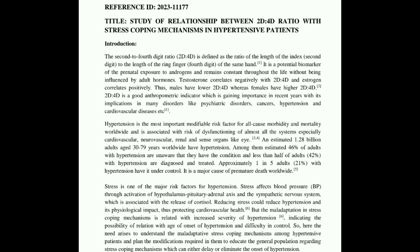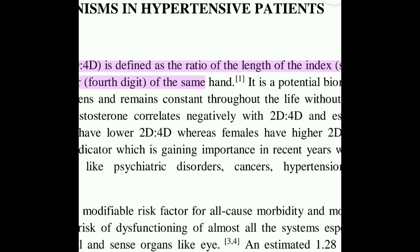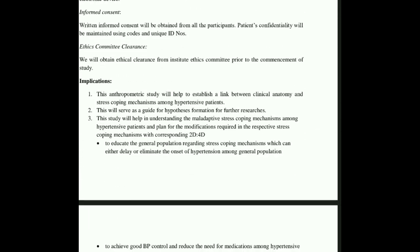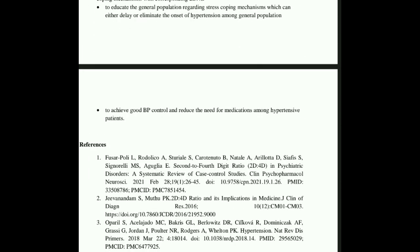For example, in this proposal, this line has been taken from an article. So after this we have written a small number one, meaning it is the first reference. Now we will go down to the references section. We will write the number one here and then provide the link — who are the authors and what is the link for that.